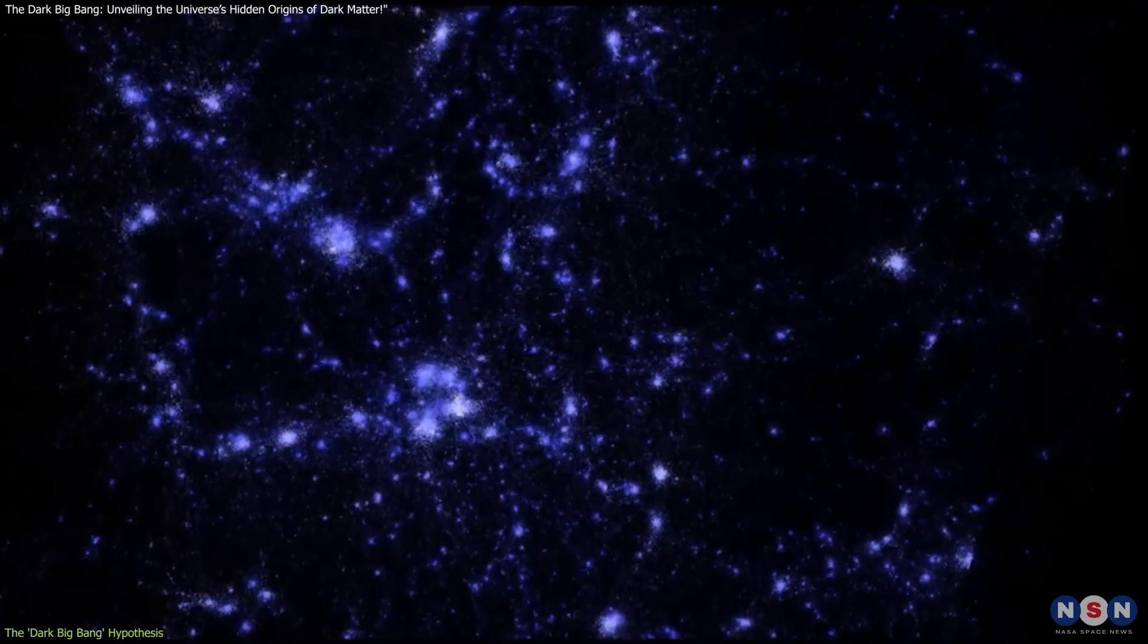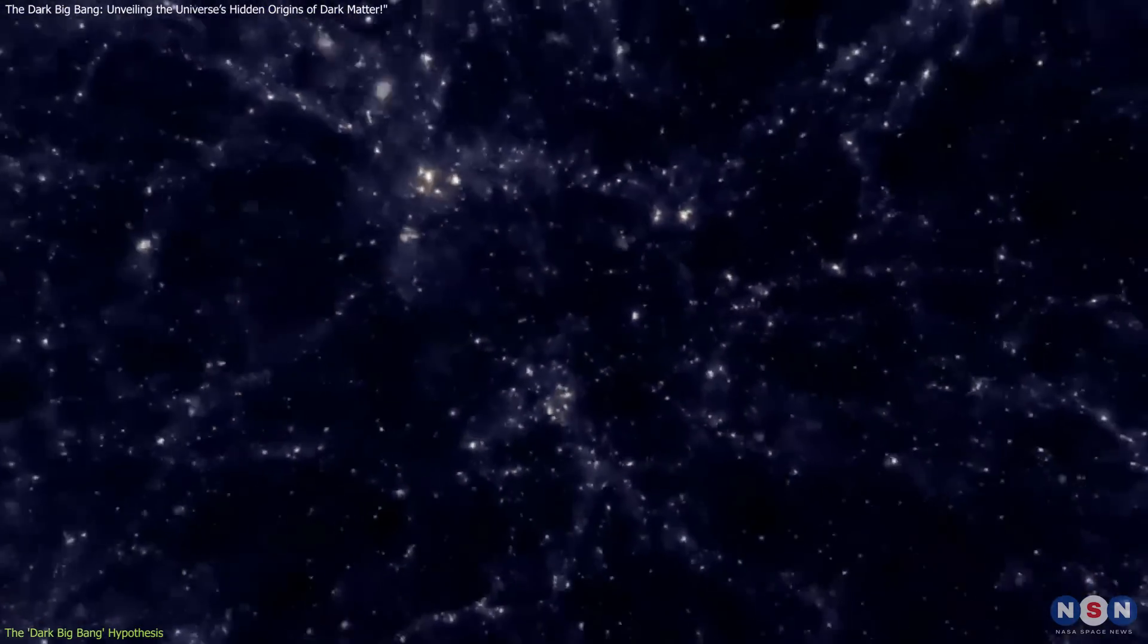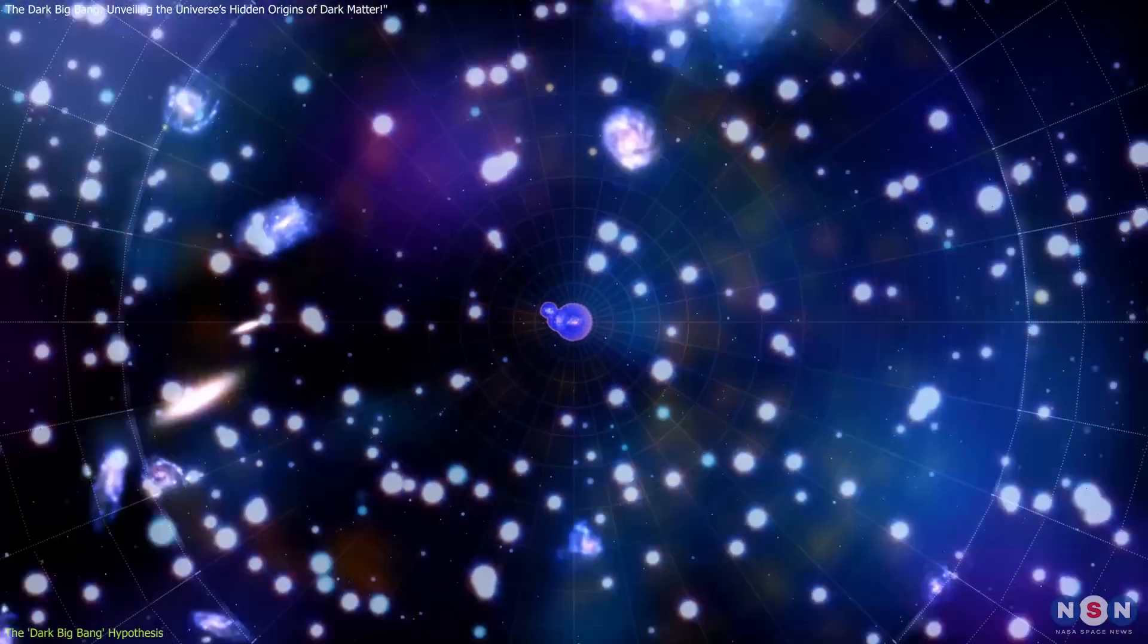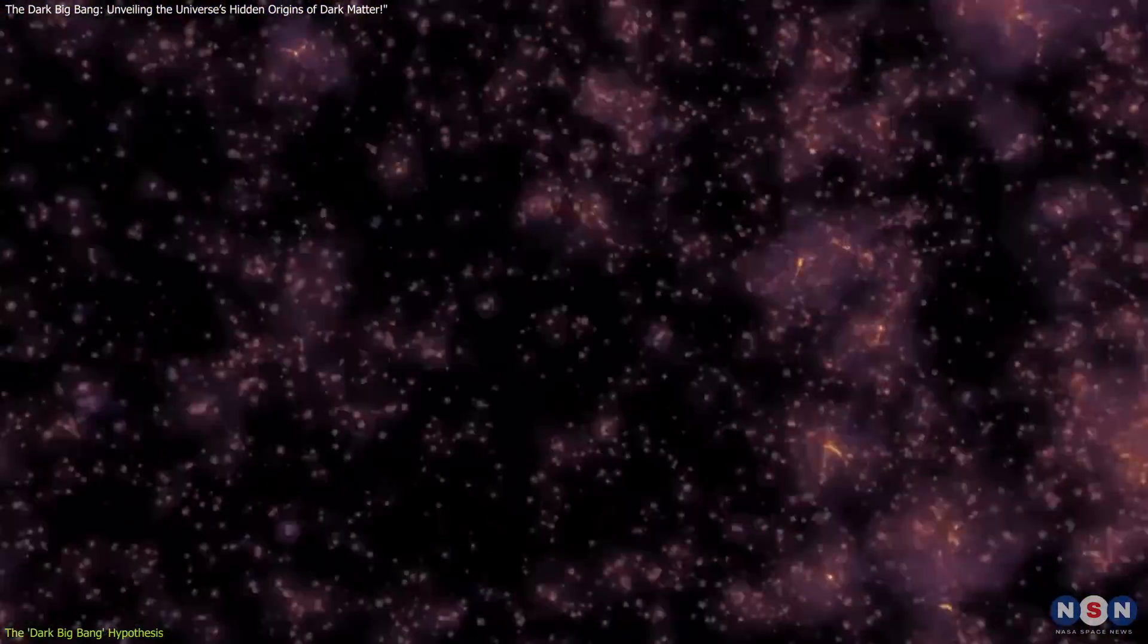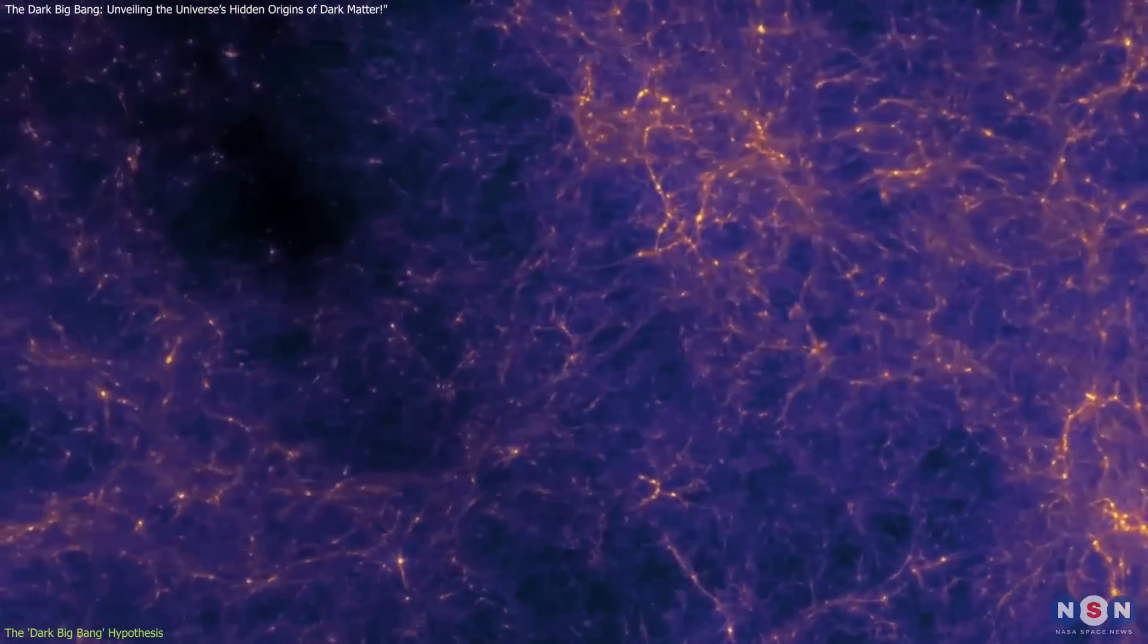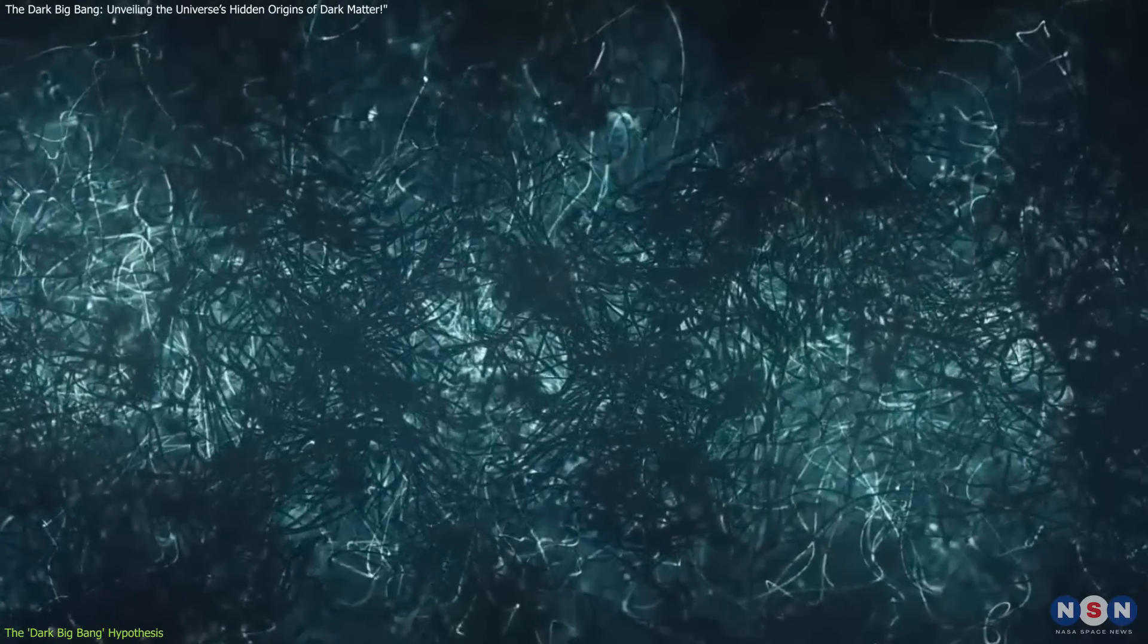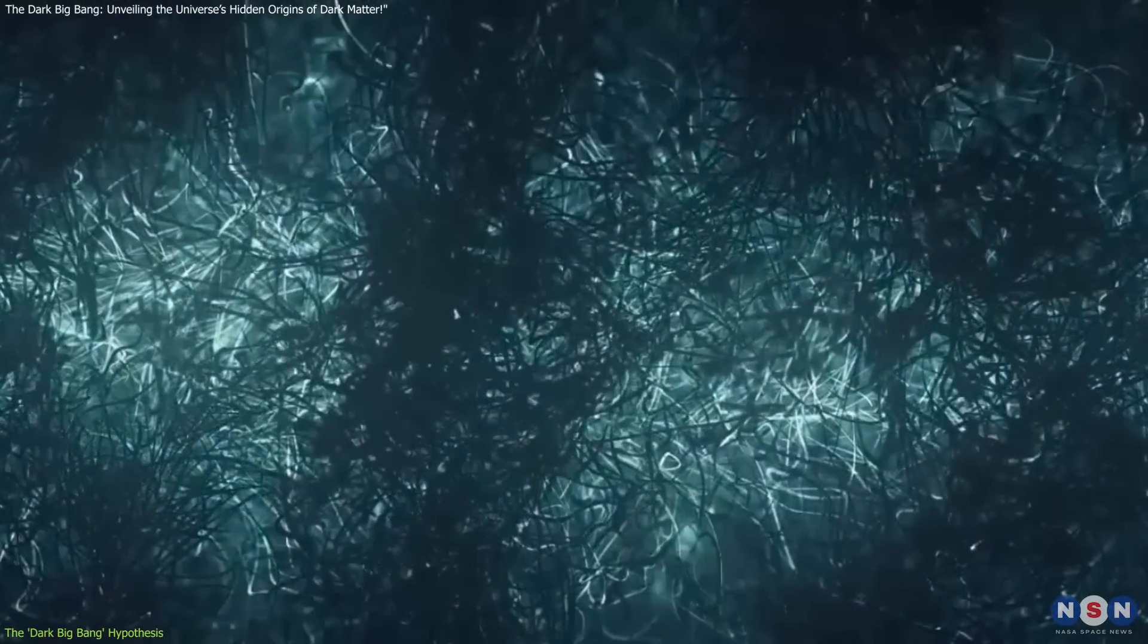The Dark Big Bang hypothesis introduces the concept of a dark sector, a hidden realm of particles and forces beyond the standard model of physics. This sector underwent a dramatic phase transition, unleashing energy that created dark matter particles. These particles primarily interact through gravity, explaining their elusiveness to conventional detection methods.